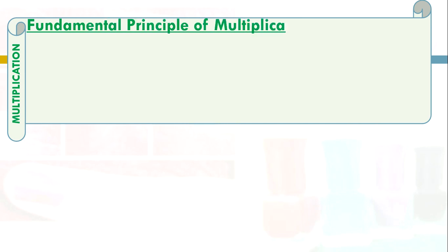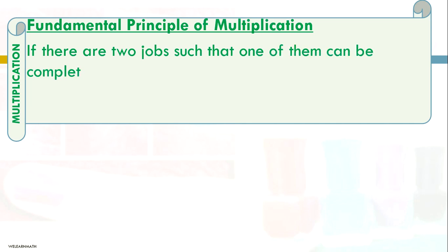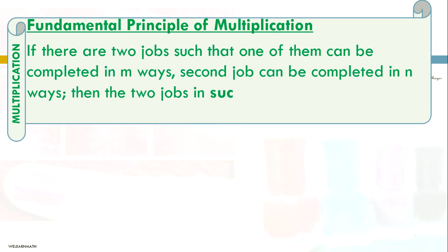Let us see what is the addition principle and multiplication principle. Fundamental principle of multiplication: If there are two jobs such that one of them can be completed in m ways and the second job can be completed in n ways, then the two jobs in succession can be completed in m×n ways.